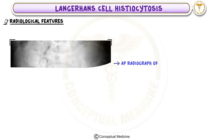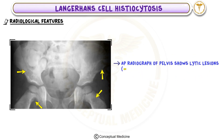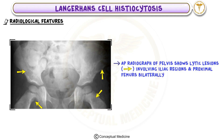AP radiograph of the pelvis shows lytic lesions involving the iliac regions and the proximal femurs bilaterally. That's all for the video — we'll see you next time.